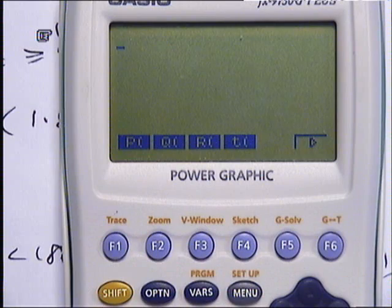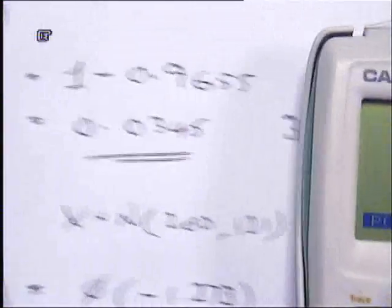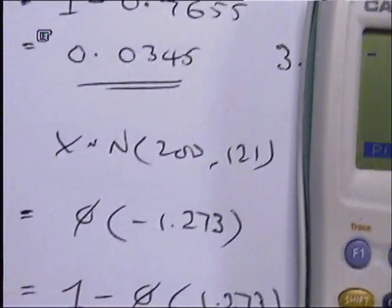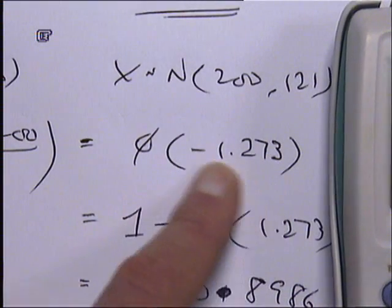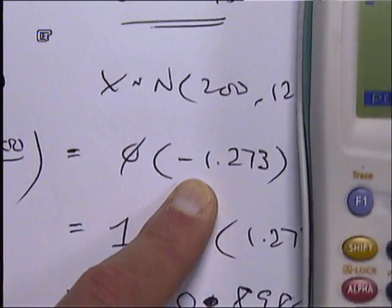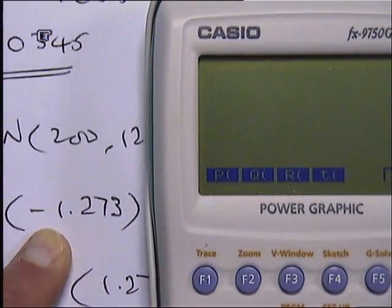And we get this p, q, and r. And the question we've just done where we were trying to find out phi of minus 1.273, if you're just trying to do phi of something like that, you just do the p.